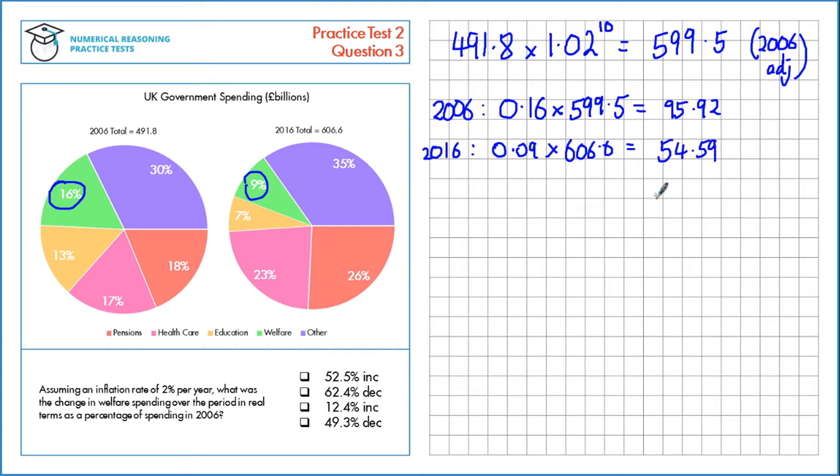We're looking for the change in welfare spending, that's the difference between these numbers. So we'll take one away from the other to give us a fall of 41.33 billion. The last thing we need to do is express that as a percentage of spending on welfare in 2006. This is our real terms change, 41.33, that's a decrease, so we're going to make that negative.